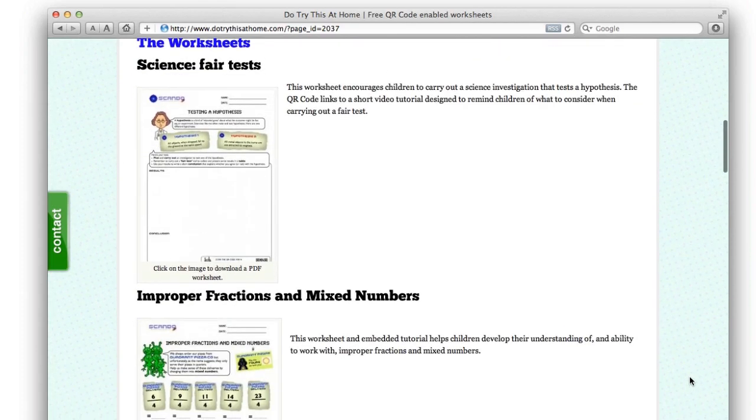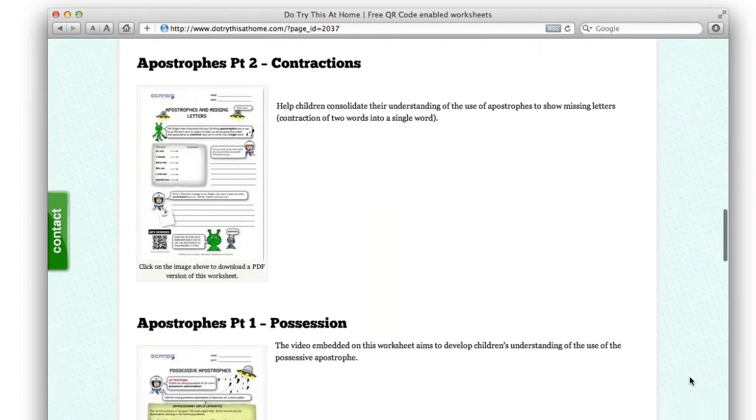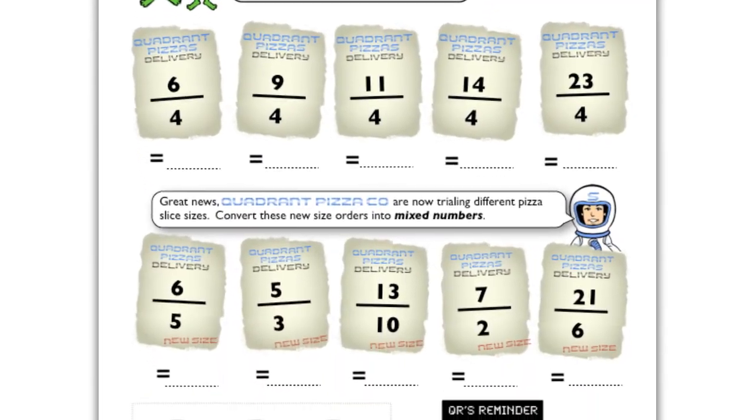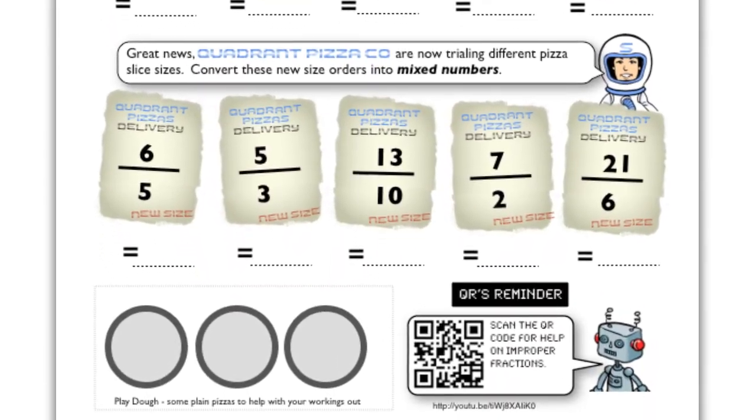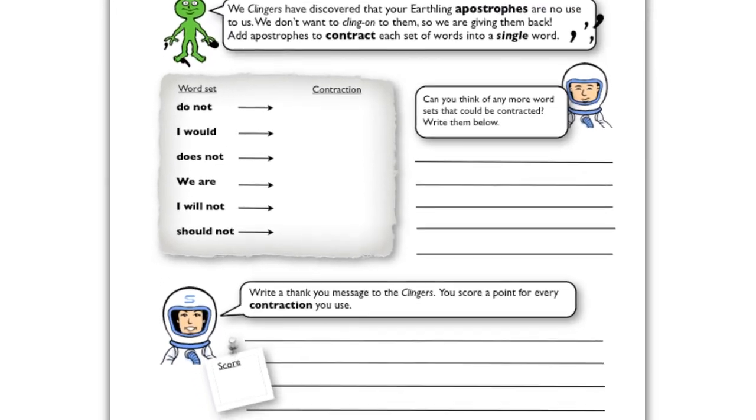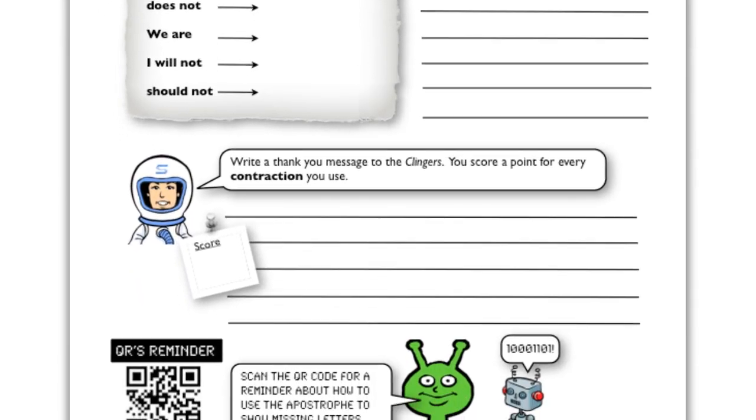DoTryThisAtHome.com has some free QR code enabled worksheets. The code on this worksheet goes to a video on YouTube about improper fractions. This worksheet's QR code goes to a video about using apostrophes in contractions.